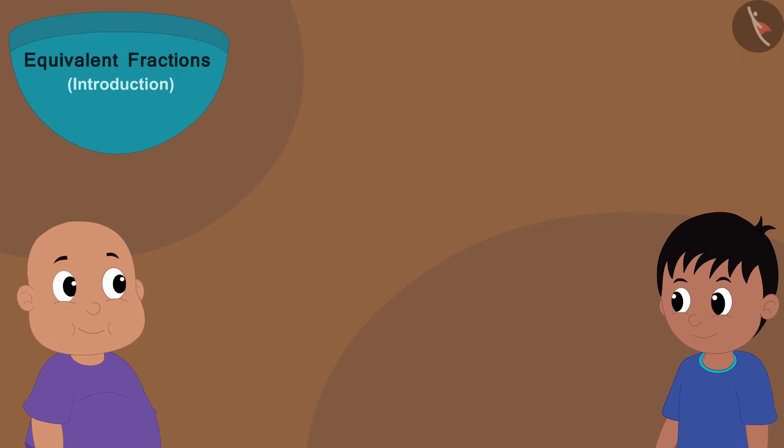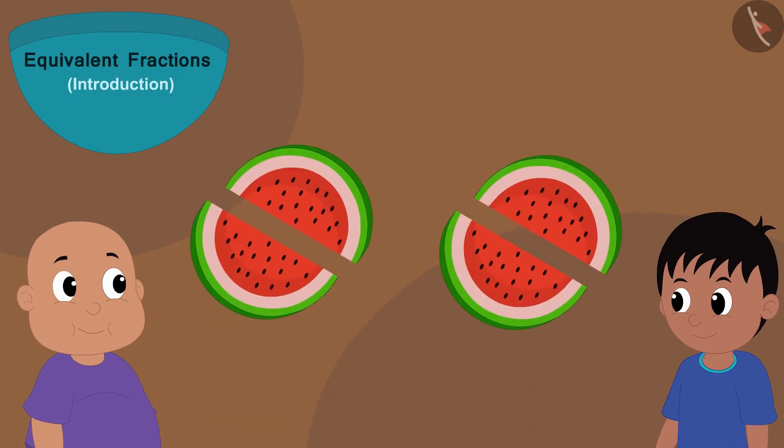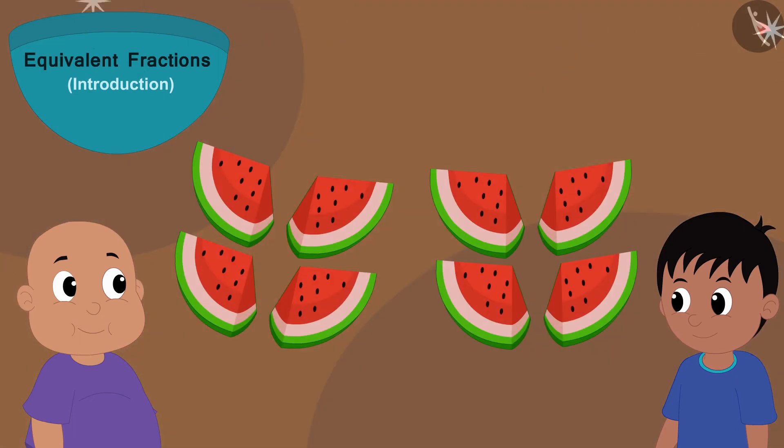Now, Raju told Bablu that even now those pieces are quite big. Can he cut them into smaller pieces? Now, he cut all the pieces from the middle and divided them into two two pieces. Now, the whole watermelon is divided into eight parts.